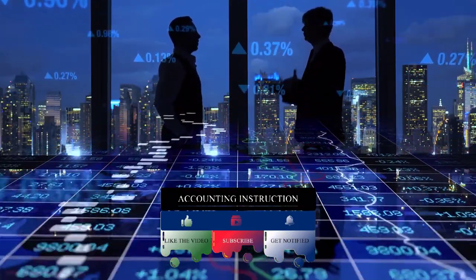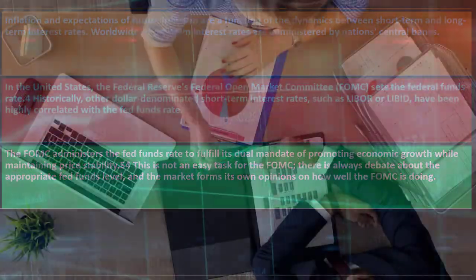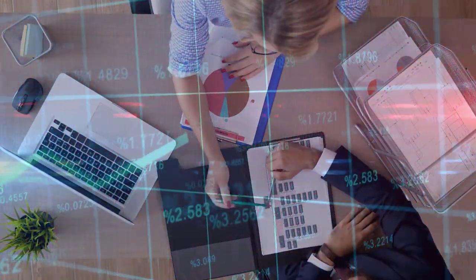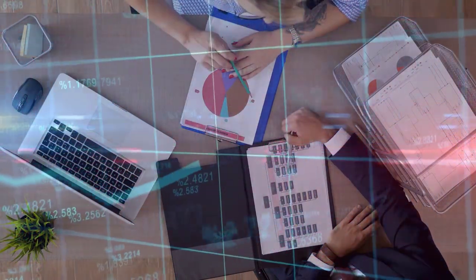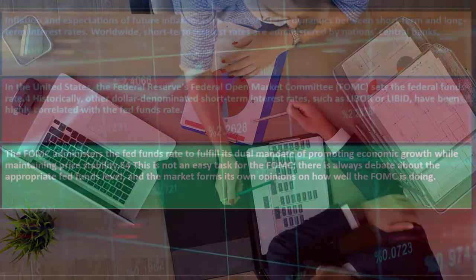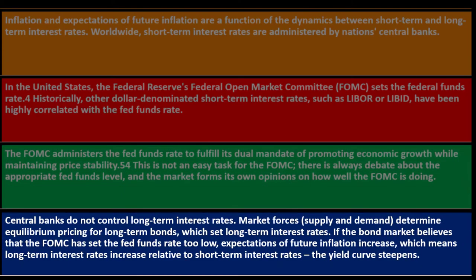The Fed's original mandate was price stability — preventing inflation from getting out of control and avoiding deflation. The dual mandate added employment as a second goal. From an economic standpoint, these two objectives often move in opposite directions: fixing price stability can require short-term pain for unemployment. This ties the Fed's hands somewhat and makes the FOMC's task difficult, with endless market debate about the appropriate fed funds level.